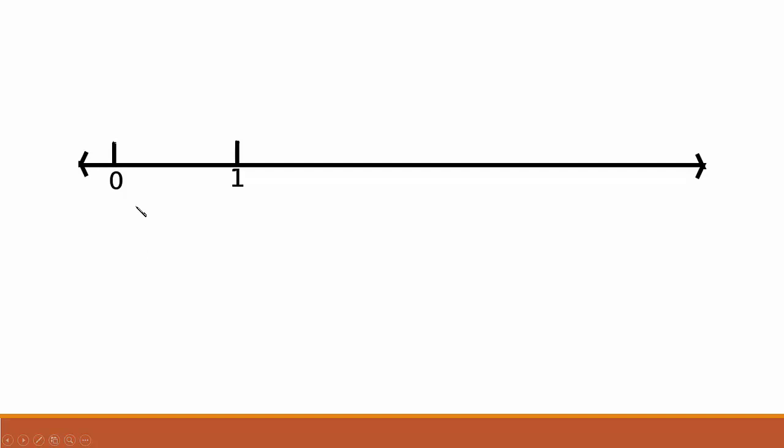We can make our units any size. This number line just has zero and one. Where would the two go? Where would the two not go?